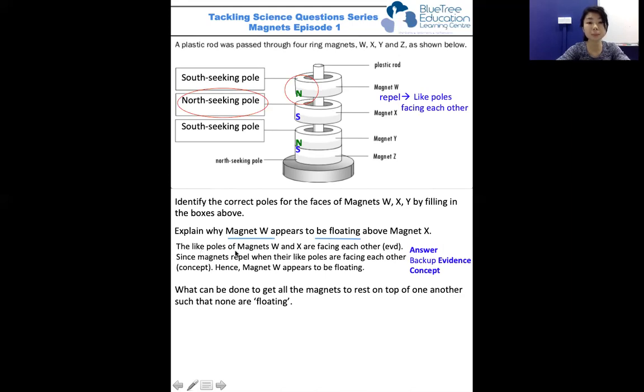So if we tie this all up and put it into the answer, we see that the like poles of magnets W and X are facing each other. And the concept is magnets repel when the like poles are facing each other, so we see W floating above X. Very simple as well.